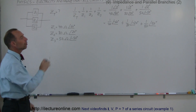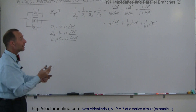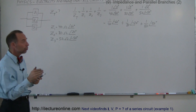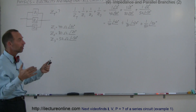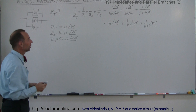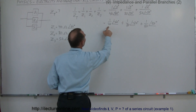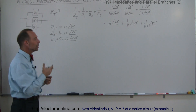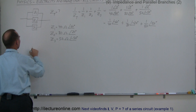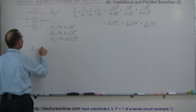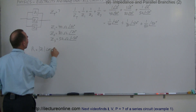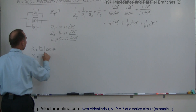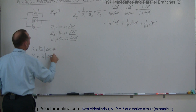Now we have everything in the numerator and we simply have to add these together. But we can't add them in polar format — we have to convert them to complex number format so we can add all the real parts and all the imaginary parts together. The real part R equals the magnitude times cosine of angle theta, and the imaginary part X equals the magnitude times sine of theta.